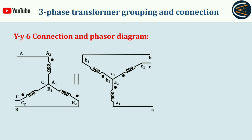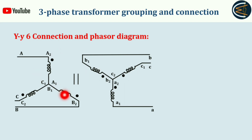The 180-degree configuration means the windings are completely opposite or reversed with each other. In YY0 they were identical — parallel and identical — but in YY6 they are parallel but completely reversed. The A phase on the primary side is opposite to the A phase on the secondary side; similarly B phase and C phase are reversed. By looking at this configuration you can easily say this is YY6 connection, and the phasor diagram will prove there is 180-degree phase displacement.